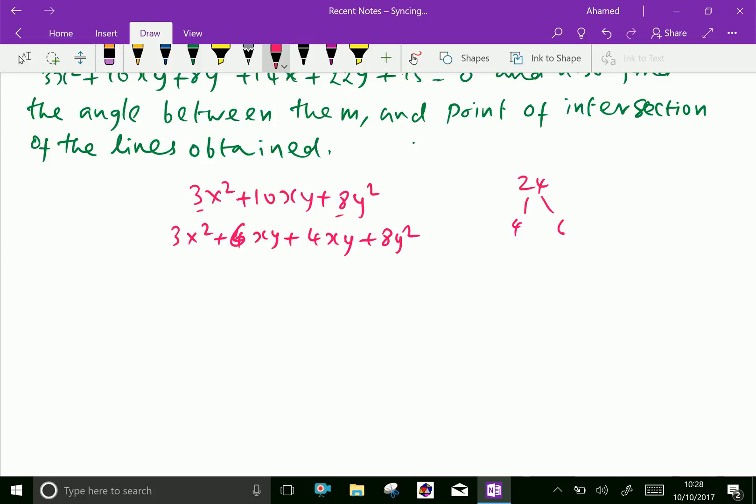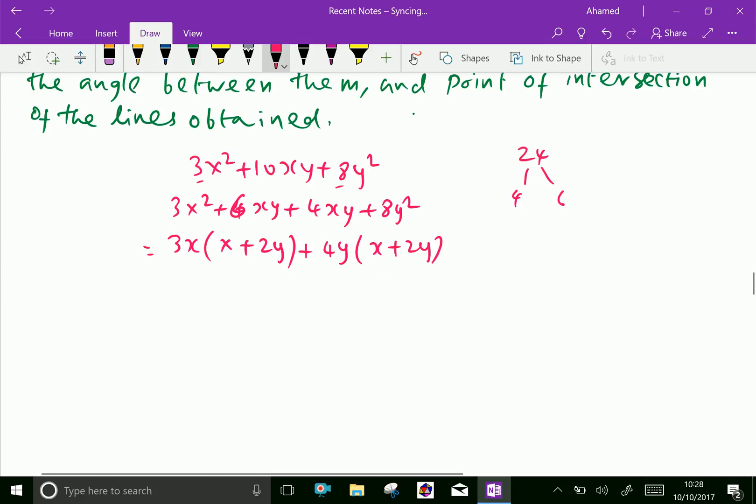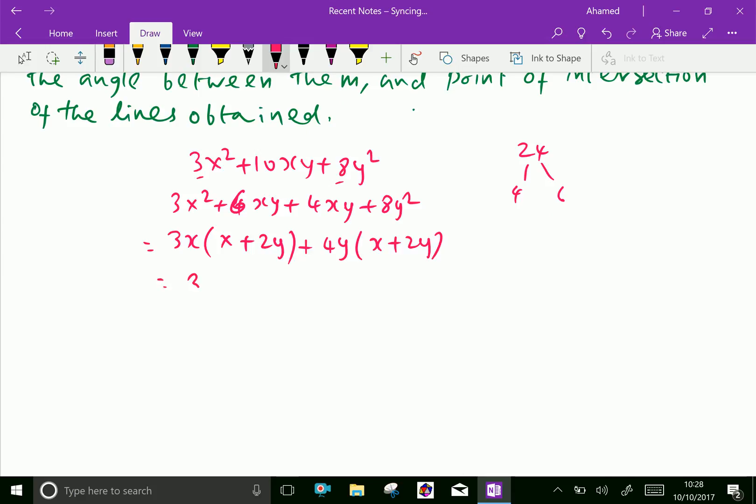Now factorize first two terms, that is 3x is common as x plus 2y and 4y is common as x plus 2y, then we have the factors like 3x plus 4y as well as x plus 2y.